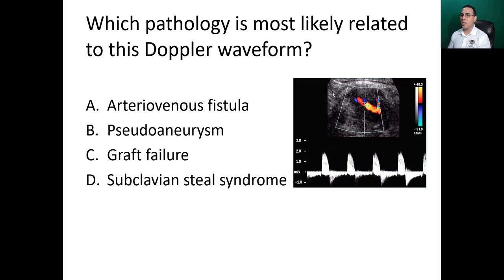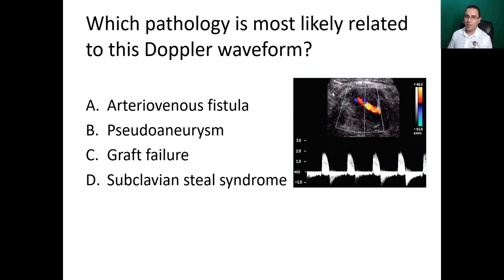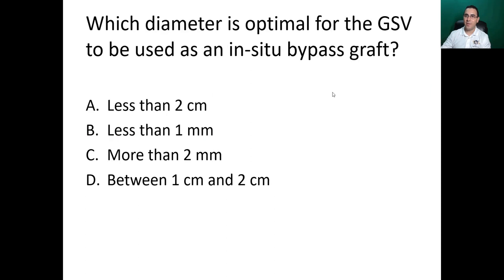Which pathology is most likely related to this Doppler waveform? The clue is that this is what we call a to-and-fro pattern, also known as the yin-yang sign. Options: A — fistula, B — pseudoaneurysm, C — graft failure, D — subclavian steal syndrome. Another clue: the Indian sign. The answer is B — pseudoaneurysm.